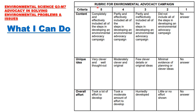This will be the rubric for grading What I Can Do. The criteria are content, unique idea, and overall effort. The perfect score for each criterion is five points. Content should completely and effectively include all of the steps in developing an environmental advocacy campaign. Unique idea should be very clever and well thought out. Overall effort: took a lot of effort to develop.